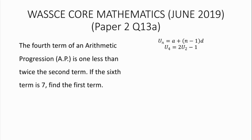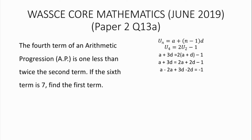Using the formula, u_2 equals a plus d, and u_4 equals a plus 3d. Substituting into the equation: a plus 3d equals 2(a plus d) minus 1. Expanding the bracket: a plus 3d equals 2a plus 2d minus 1. Grouping like terms: a minus 2a plus 3d minus 2d equals minus 1, giving us minus a plus d equals minus 1. We name this Equation 1.